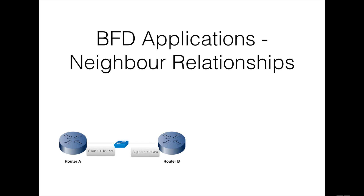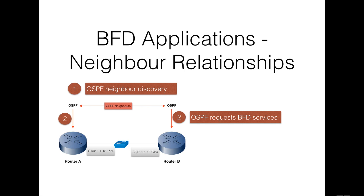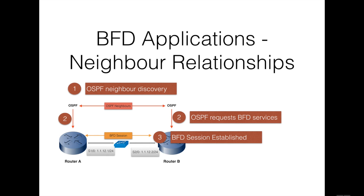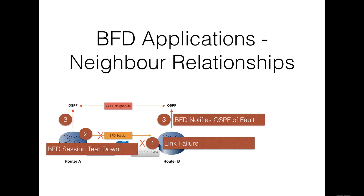Looking at the interaction between OSPF and BFD: when OSPF discovers a neighbor, it sends a request to the local BFD process to initiate a BFD neighbor session with the OSPF neighbor router, and the BFD session is established. When a failure occurs, the BFD session is torn down and BFD notifies the local OSPF process that the BFD neighbor is no longer reachable. The local OSPF process tears down the OSPF neighbor relationship, and if an alternative path is available, the routers will immediately start converging on it.